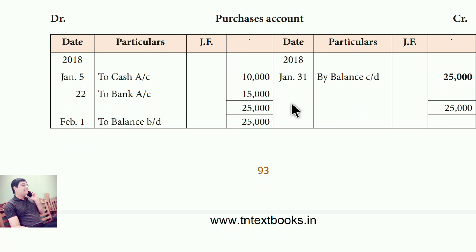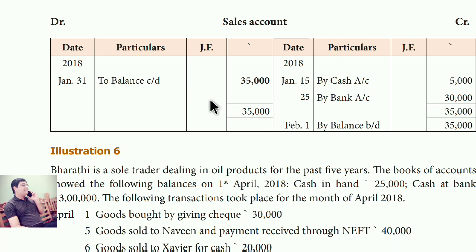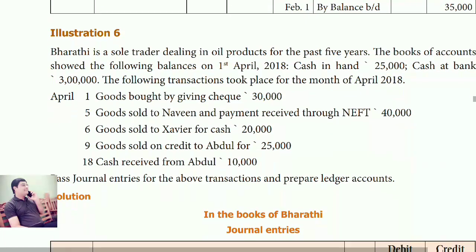See the purchase account: debit side is 25,000 and credit side has nothing. Write 'By balance carry down, January 31st, 25,000'. This month carry down becomes next month's brought down, so below the total write 25,000. For the sales account: credit side has 'By cash account' and 'By bank account' — 5,000 plus 30,000 = 35,000. Debit side has nothing. Write 'To balance carry down, 35,000'. This month carry down becomes next month's brought down.